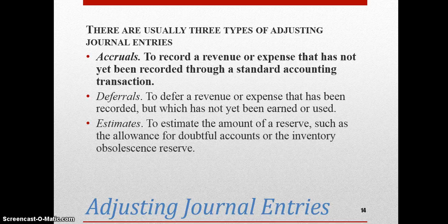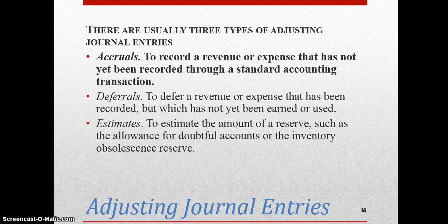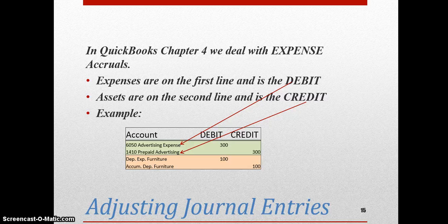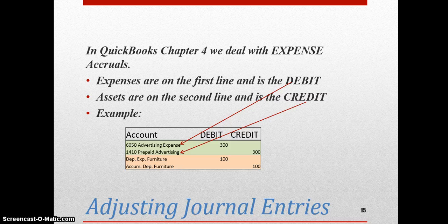There are usually three types of adjusting journal entries. We really only deal with one most of the time, and that one is called accruals — it's used to record a revenue or expense that has not been recorded through a standard accounting transaction. But you also have what we call deferrals, and you also have estimates. In QuickBooks Chapter 4, we deal with expense accruals. Expenses are on the first line and it is the debit. Assets are on the second line and it is the credit. For example, account 6050 advertising expense is $300, and account 4010 is the prepaid advertising, which is $300. And that's how we keep track of it in adjusting journal entries.